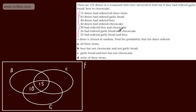26 had ordered garlic bread and cheesecake. So the garlic bread and cheesecake is just here. We've already got 15. So this must be 11. And that's the intersection of the two just here.